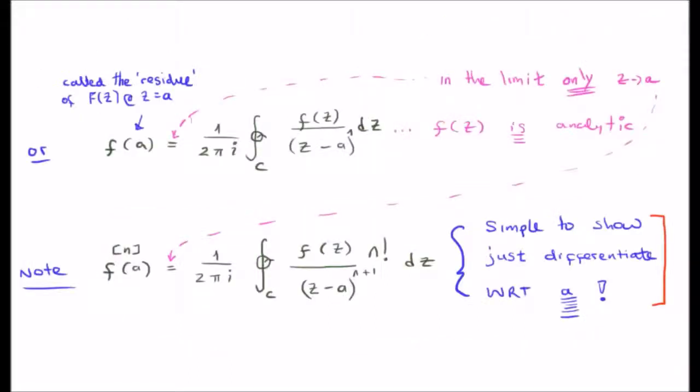A quick look ahead - we could rearrange this particular formula for f of a. As we'll see later on, f of a is referred to as the residue of the function capital F of z at z is equal to a. This particular expression is only valid in the limit as z approaches a. And we know of course that small f of z is analytic.